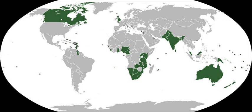The chief institutions of the organisation are the Commonwealth Secretariat, which focuses on intergovernmental aspects, and the Commonwealth Foundation, which focuses on non-governmental relations between member states. The Commonwealth dates back to the first half of the 20th century with the decolonisation of the British Empire. It was originally created as the British Commonwealth of Nations through the Balfour Declaration at the 1926 Imperial Conference, and formalised by the United Kingdom through the Statute of Westminster in 1931.